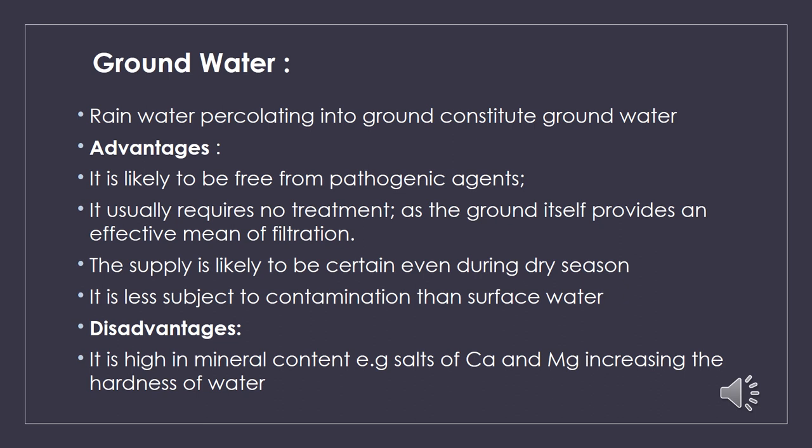Rainwater percolating into the ground constitutes groundwater. Groundwater is the cheapest and most practical means of providing water to smaller communities. Sources include shallow wells, deep wells, and springs. Groundwater is likely to be free from pathogenic agents and usually requires no treatment. It is considered superior to surface water because it provides an effective filtering medium, supply is certain even during dry seasons, and it is less subject to contamination than surface water.